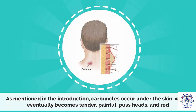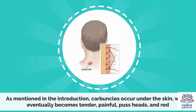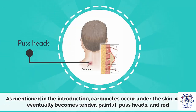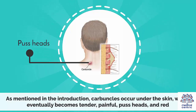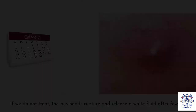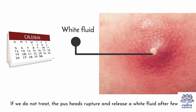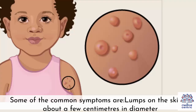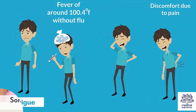As mentioned in the introduction, carbuncles occur under the skin, which eventually becomes tender, painful, forms pus heads, and is red. If we do not treat them, the pus heads rupture and release a white fluid after a few days. Some of the common symptoms include lumps on the skin of about a few centimeters in diameter.